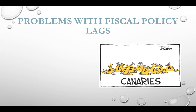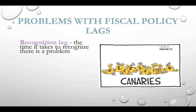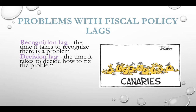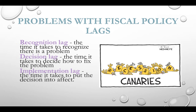Now, some of the problems with fiscal policy. The first problem is the recognition lag — it doesn't always happen that the government recognizes there's a problem. If the government doesn't see that we're in a recession or experiencing inflation, they can't fix it. The next type is the decision lag — even when we know there's a problem, Congress and the president can't agree on how to fix it or reach consensus. Finally, there's the implementation lag — the time it takes to put the decision into effect. A problem must be recognized, Congress and the president must decide, and then it must be implemented. This is one of the big problems with fiscal policy: it takes a long time to be enacted.